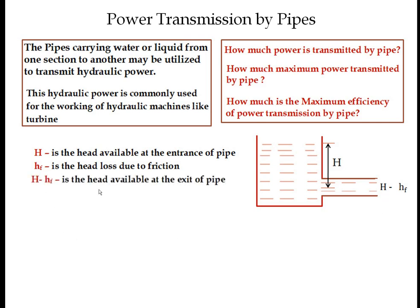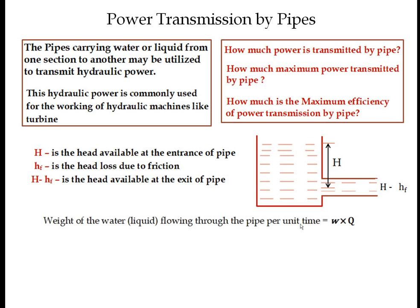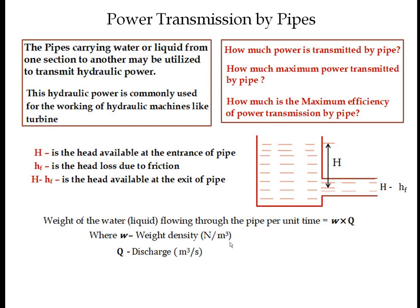H minus HF is the head available at the exit of the pipe. The weight of water flowing through the pipe per unit time has units of Newton per second, and equals weight density (W, in N/m³) multiplied by discharge Q (in m³/s), giving Newton per second.